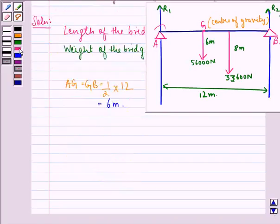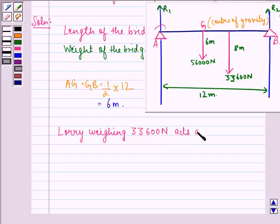The lorry weighing 33,600 Newton is at 2/3 of 12 meters, that is 8 meters from point A.